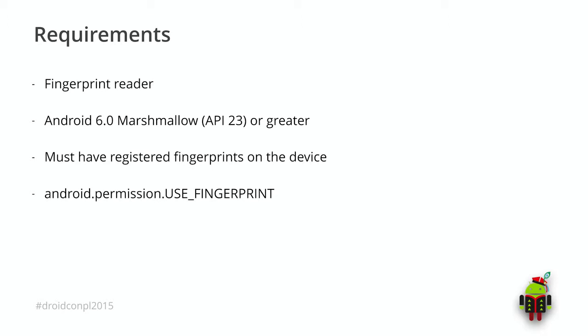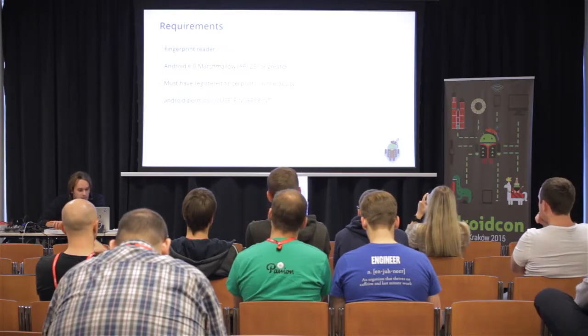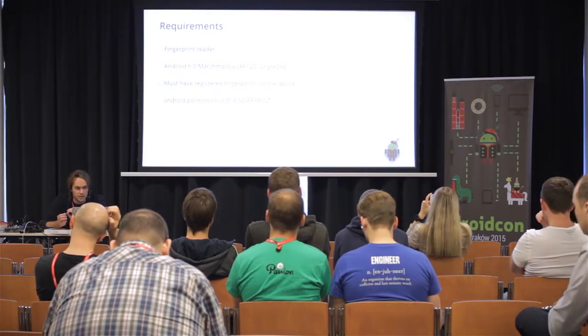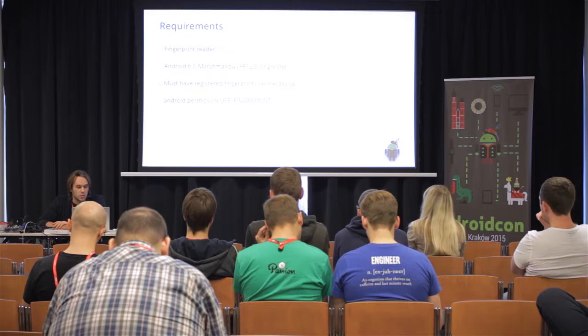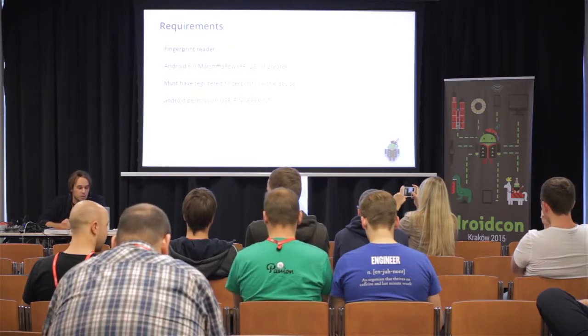What do we need to do to implement this API? First of all, the device should have hardware sensor support — it should be on your device or it can be connected. Second, this API will work only on Android Marshmallow and above. We must register our prints on the device in the settings prior to using this API in our application. We should also specify a new permission in the Android manifest: USE_FINGERPRINT.